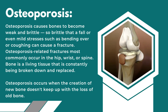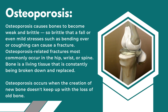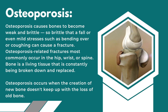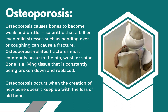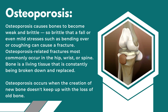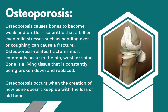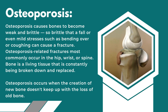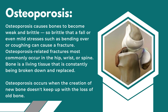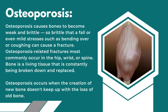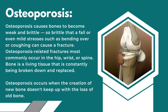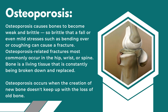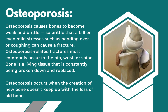Osteoporosis causes bones to become weak and brittle — so brittle that a fall or even mild stresses such as bending over or coughing can cause a fracture. Osteoporosis-related fractures most commonly occur in the hip, wrist, or spine. Bone is living tissue that is constantly being broken down and replaced. Osteoporosis occurs when the creation of new bone doesn't keep up with the loss of old bone.